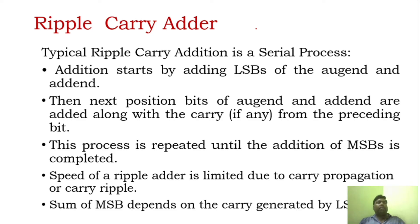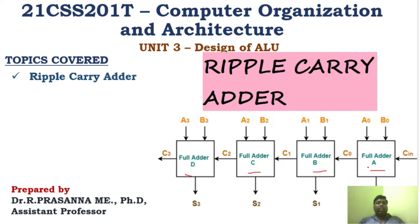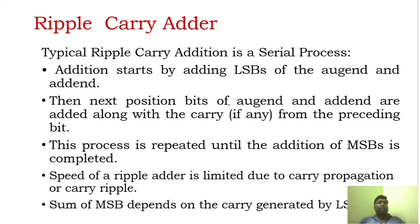The name — why is it called ripple carry adder? Because it will ripple the carry from LSB to MSB. Since it is used for n-bit numbers, we will use n full adders. That is, n full adders. For example, if it is a 4-bit ripple carry adder, you will use 4 full adders. Like that it goes on.